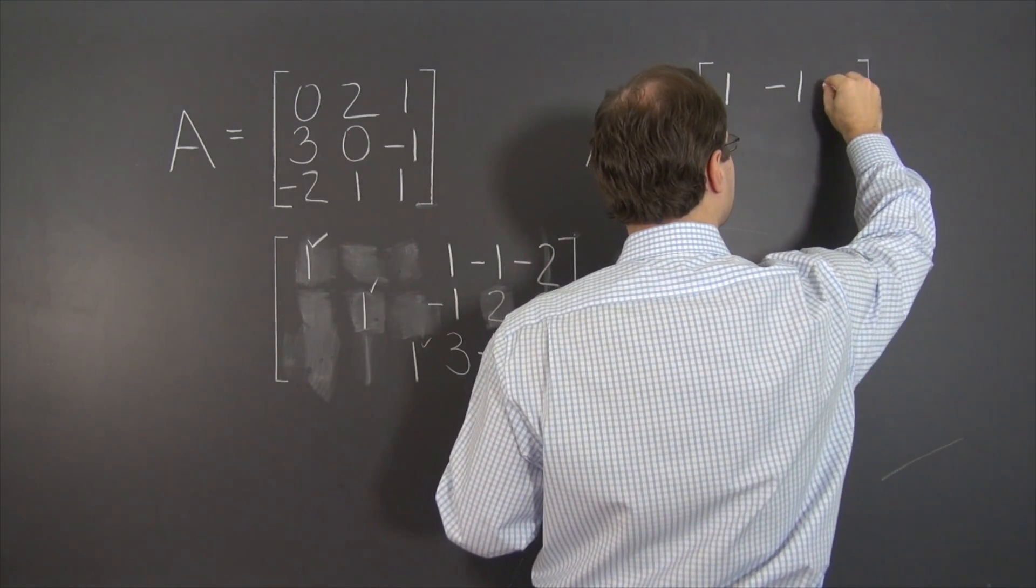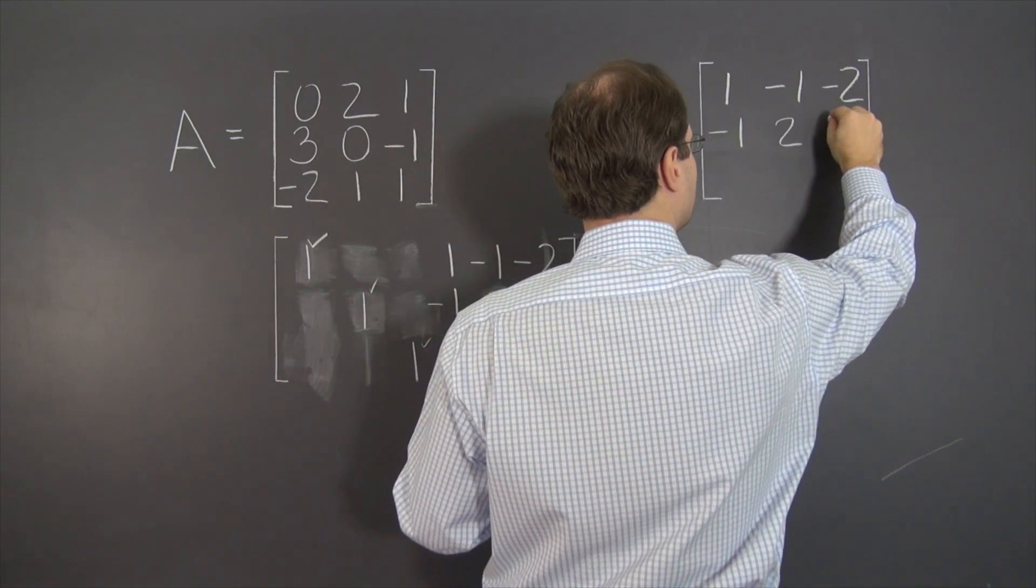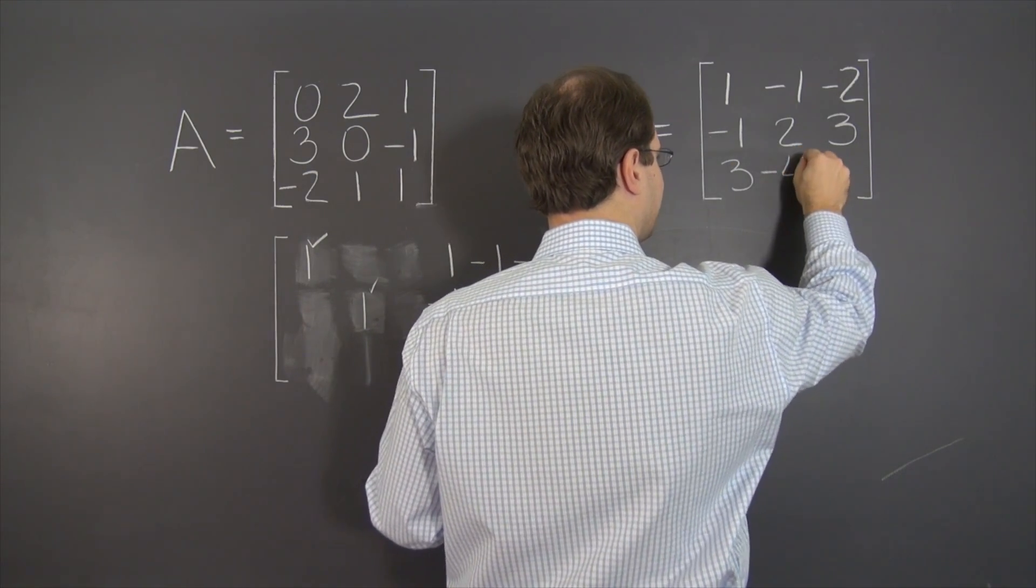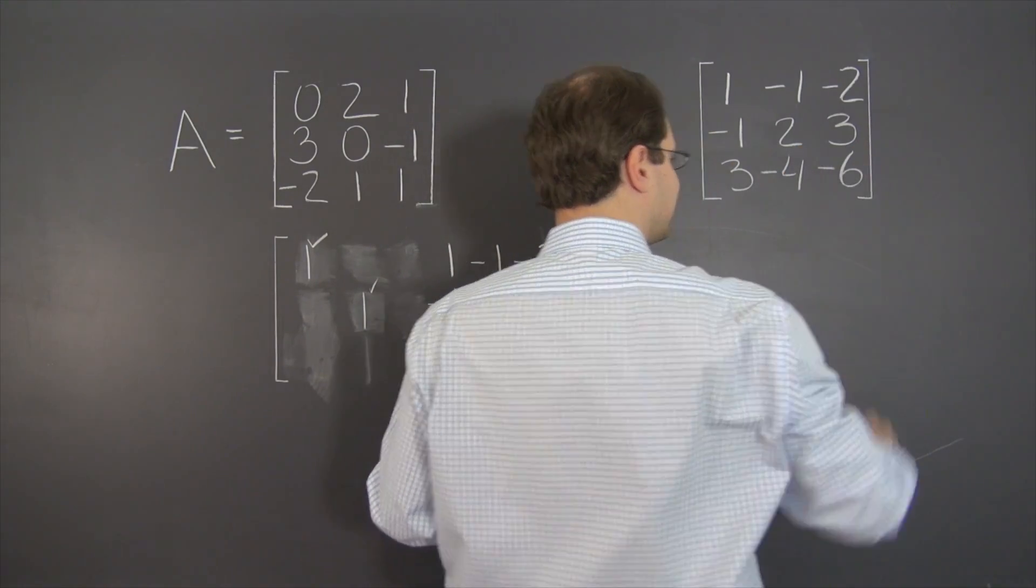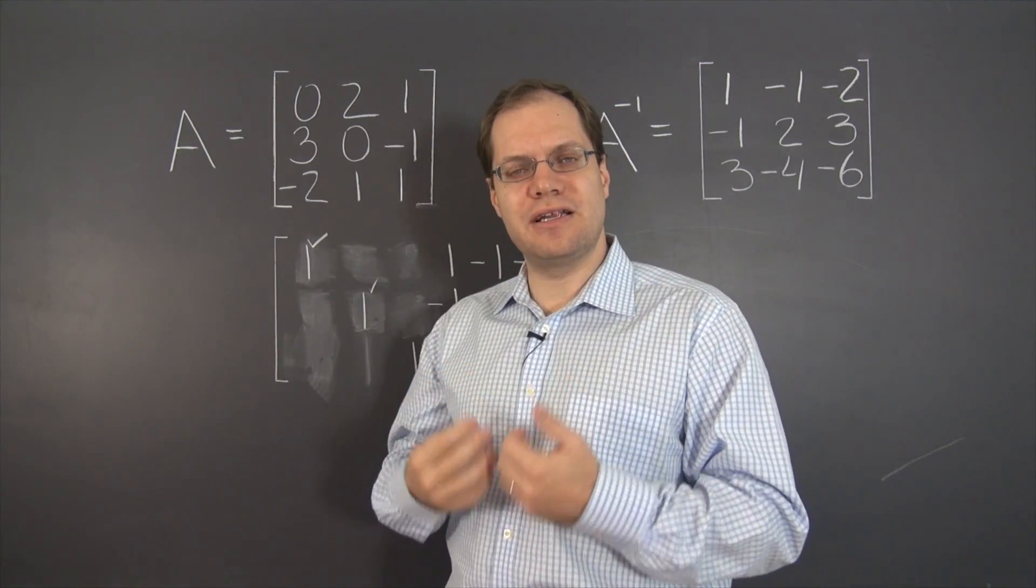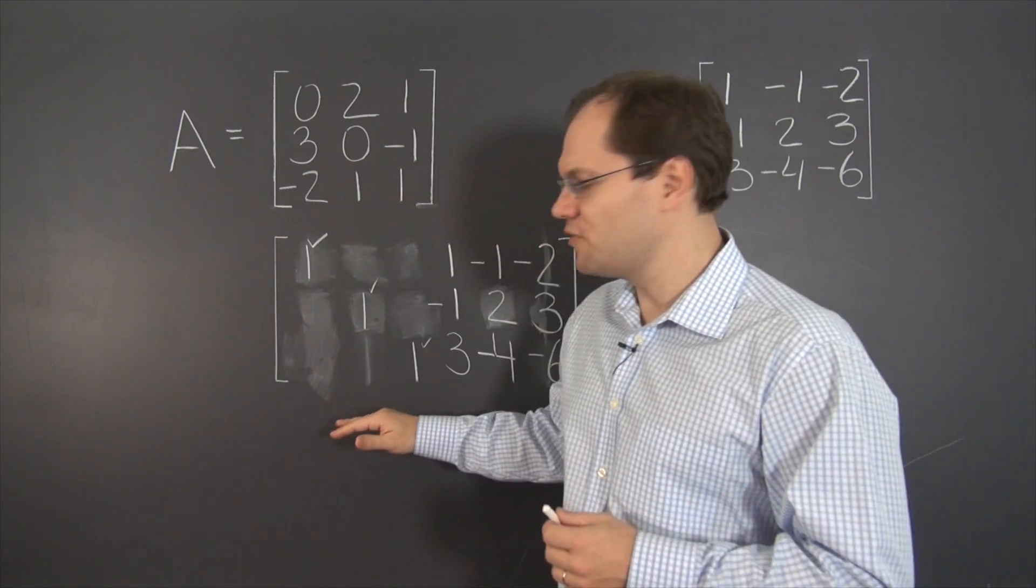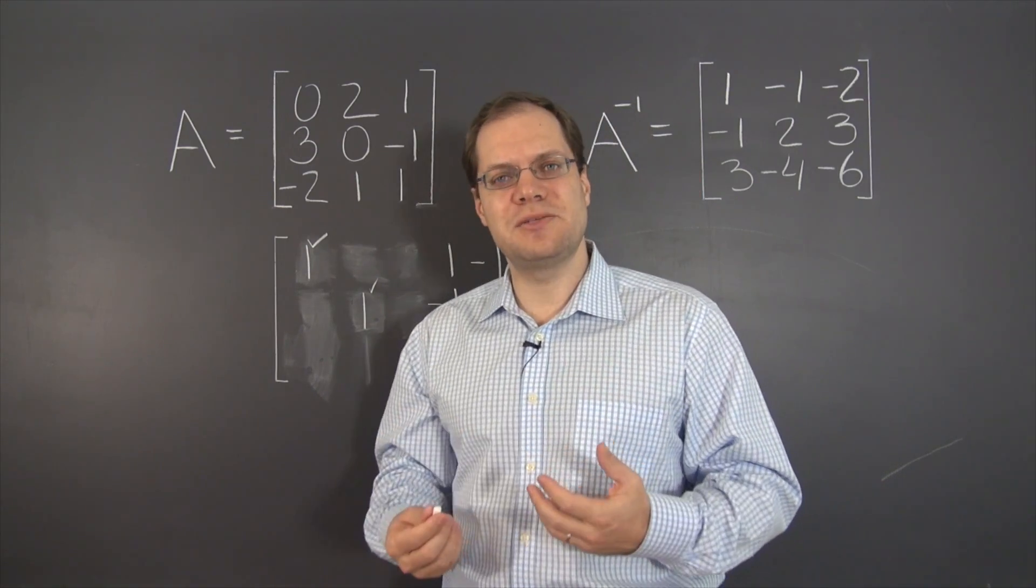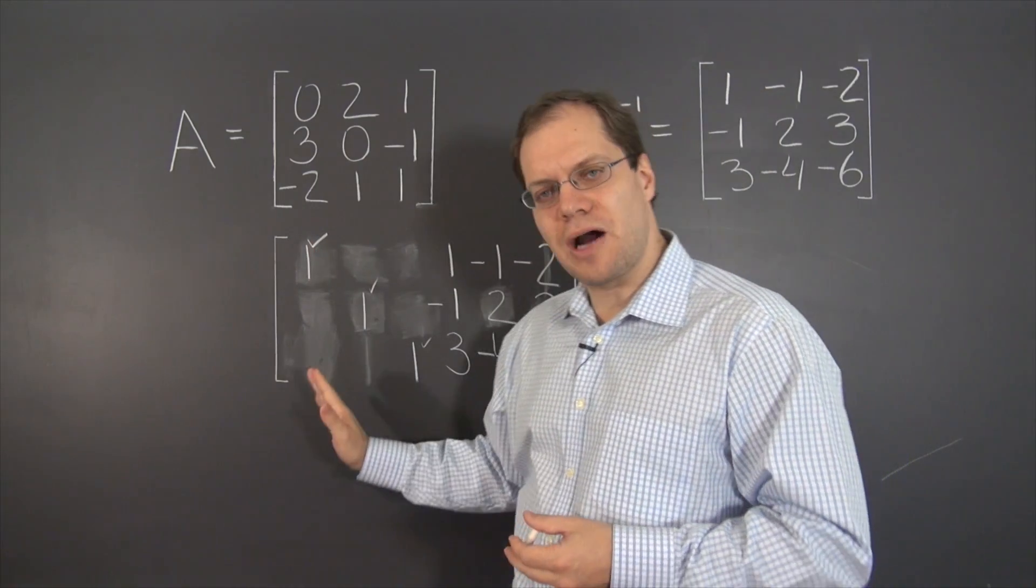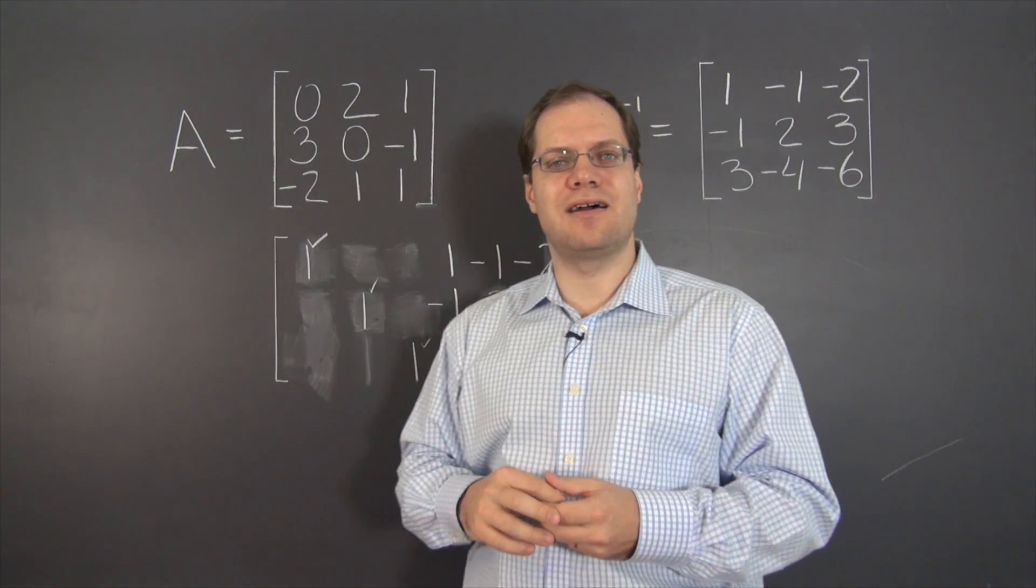One, minus one, minus two, negative one, two, three, three, negative four, negative six. And we were able to carry through the entire algorithm without encountering any fractions. All thanks to our creative order in which we performed Gauss elimination, which was much less painful than it would have been had we pursued Gauss elimination in the proper order, starting with the first column, then the second column, and finally the last column.